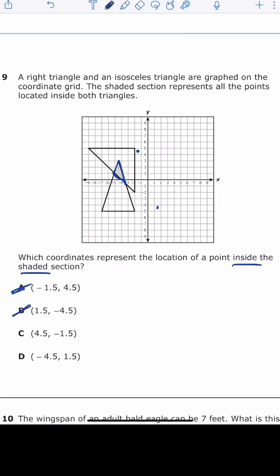Letter C is 4.5 and negative 1.5. So that's 4.5 to the right, down 1.5. Again, that's nowhere close.